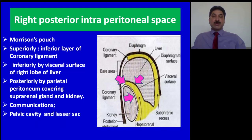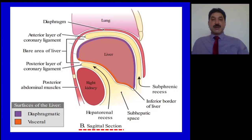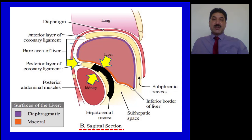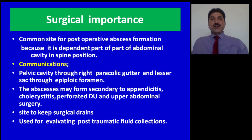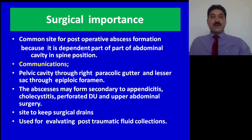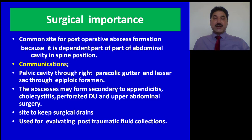This space is important clinically because of its communications. It communicates with the lesser sac through the epiploic foramen. As shown in this diagram, this space is bounded superiorly by the coronary ligament and lies between the visceral surface of the right lobe of liver and the anterior surface of the right kidney — that is why it is called the hepatorenal pouch of Morrison. Morrison's pouch is the common site for post-operative abscess formation because it is the most dependent part of the abdominal cavity in the supine position. It communicates with the pelvic cavity through the right lateral paracolic gutter and with the lesser sac through the epiploic foramen. Abscesses may form secondary to appendicitis, cholecystitis, perforated duodenal ulcer, and upper abdominal surgery. This site is also commonly used by surgeons for post-operative drainage.